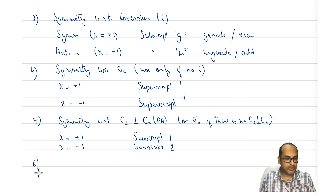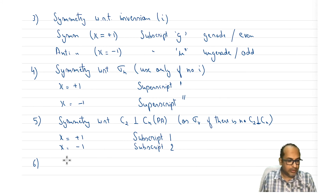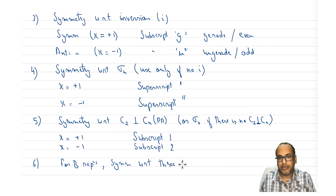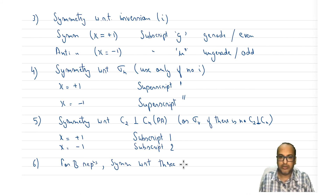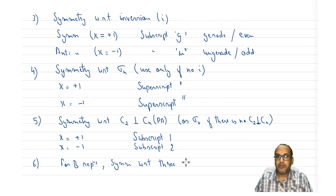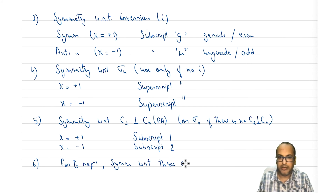Now, if there are three equally important perpendicular C2 axes — and this happens only for B representations — for example in D2H where we have C2Z, C2X, and C2Y and we don't know which one is the principal axis — then we have three equally important C2 axes.